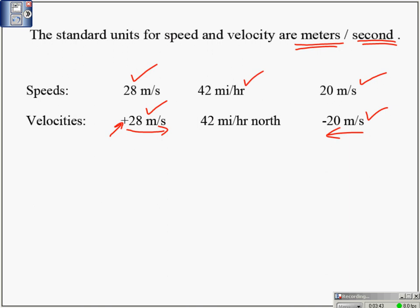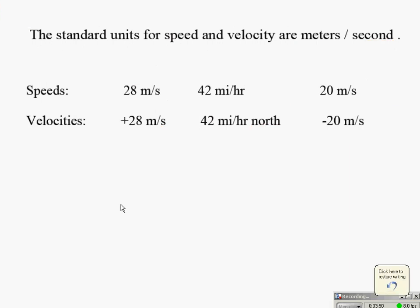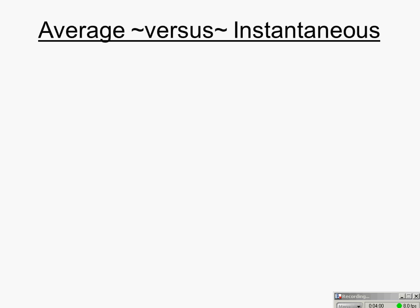In the British system, 42 miles per hour would be your speed, while 42 miles per hour north would be a velocity because it indicates direction. When you get a speeding ticket for going 70 miles an hour, that's your speed — it is not your velocity. We also have to know the difference between average and instantaneous speed and velocity.